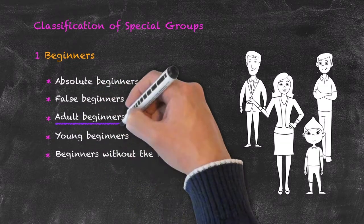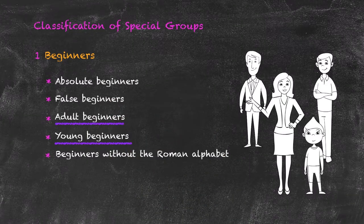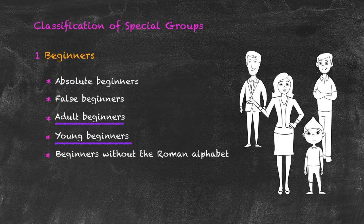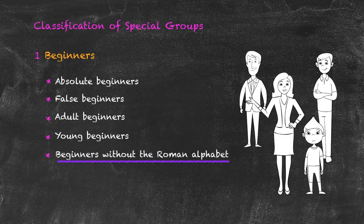The adult and young beginners — obviously those categories are fairly self-explanatory. The only difference comes between where we recognise the young beginner to finish and the adult beginner to start. Typically we're looking at an age somewhere between 16 and 18 for the separation of those categories. The final one, the beginners without the Roman alphabet — obviously the types of lessons we're going to be doing at the start of that course will have to include very simple structures such as the actual alphabet itself.